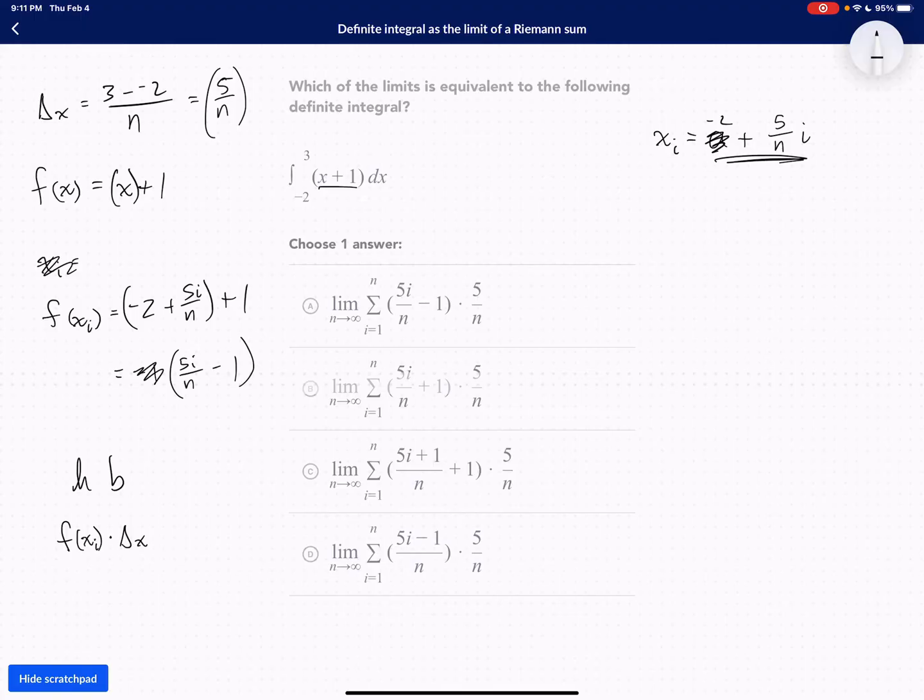So you've got to multiply those two together to get the area of each rectangle. Okay, so we got, let's write it out nice. So we have 5i divided by n minus 1. And that's multiplying by 5 over n.